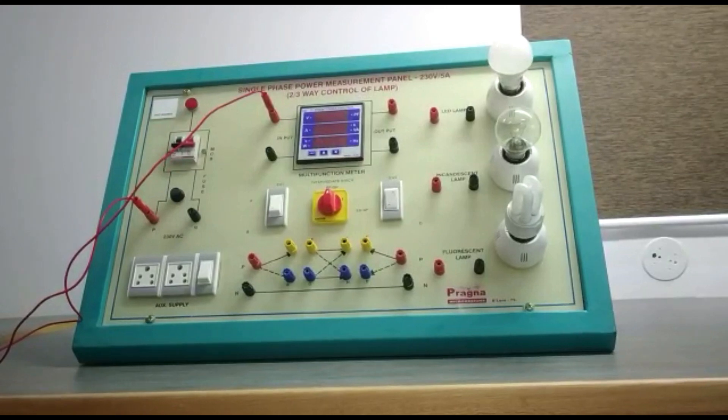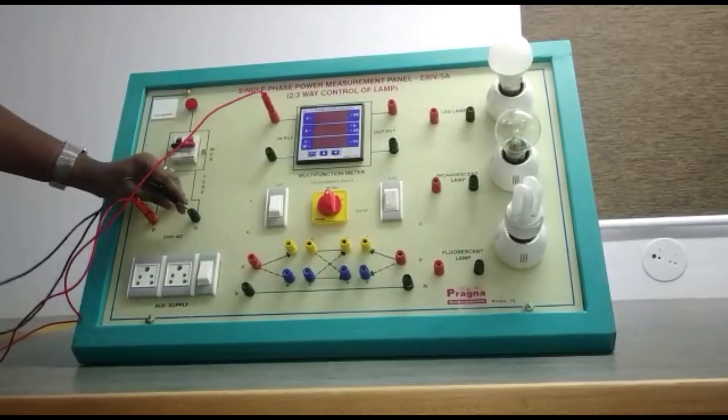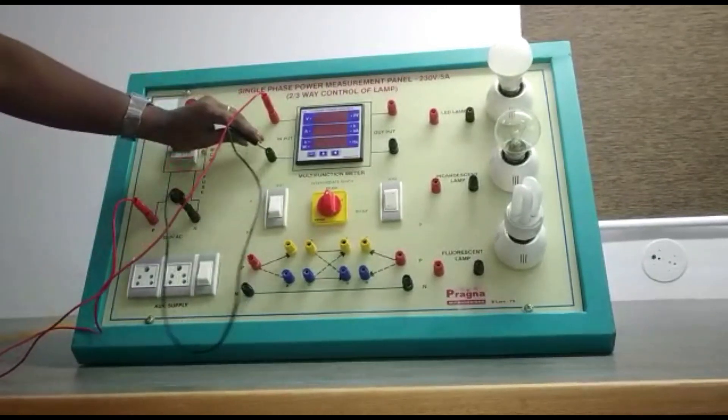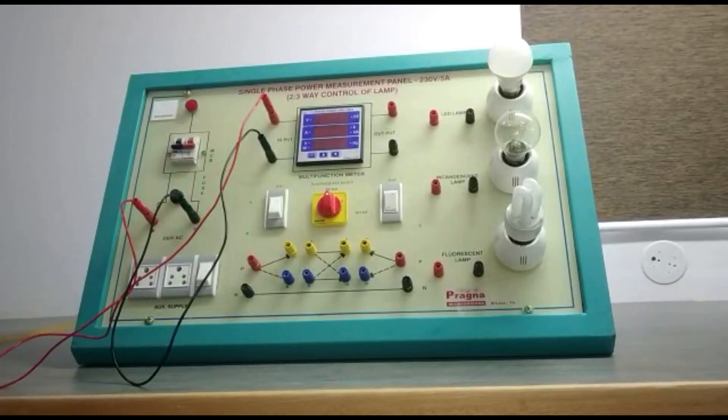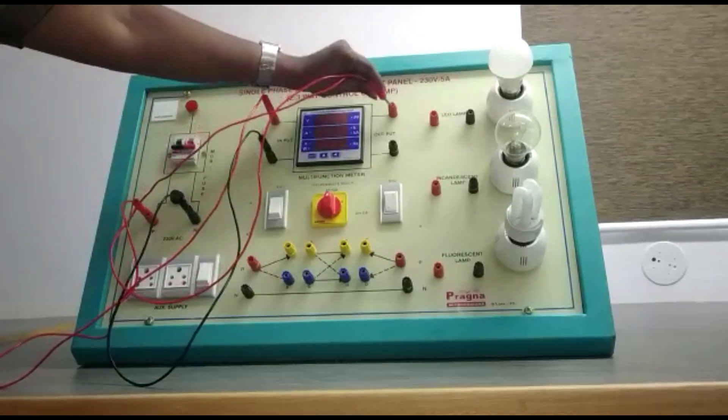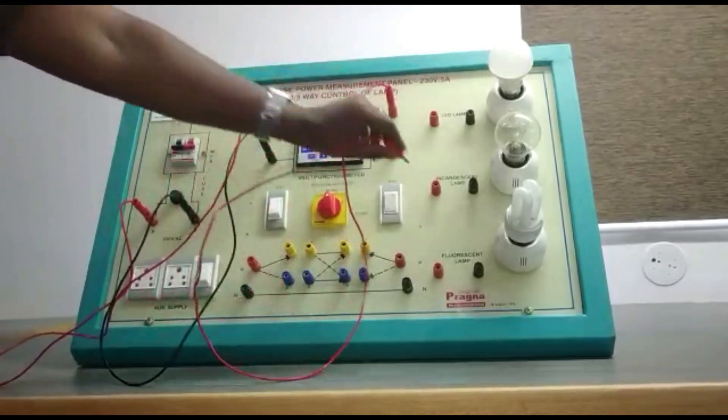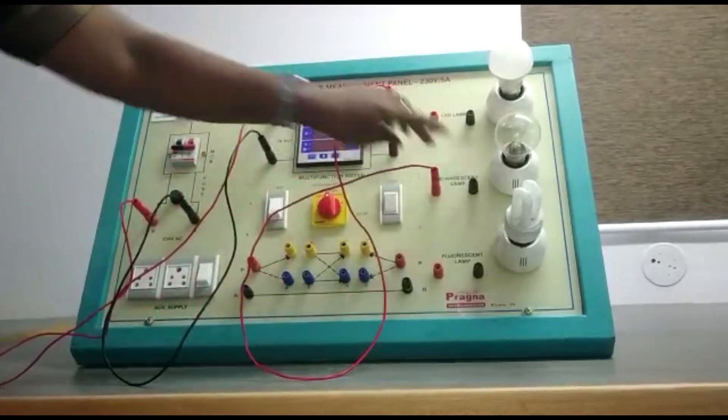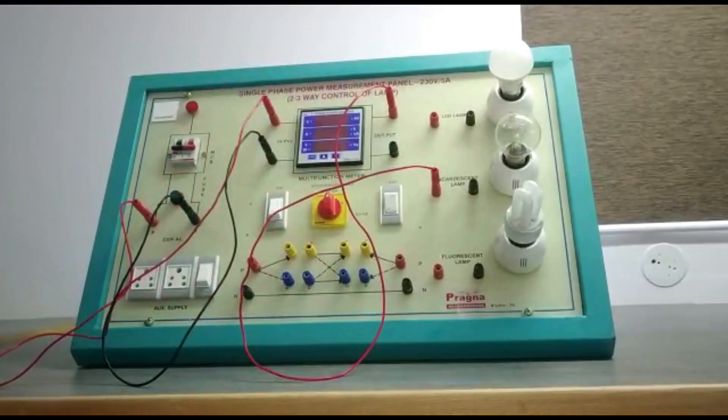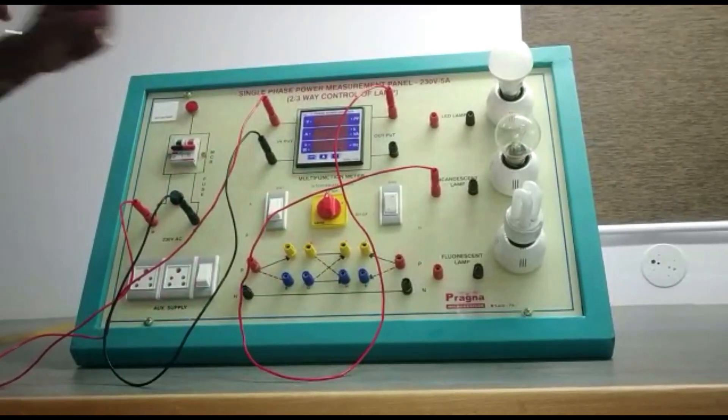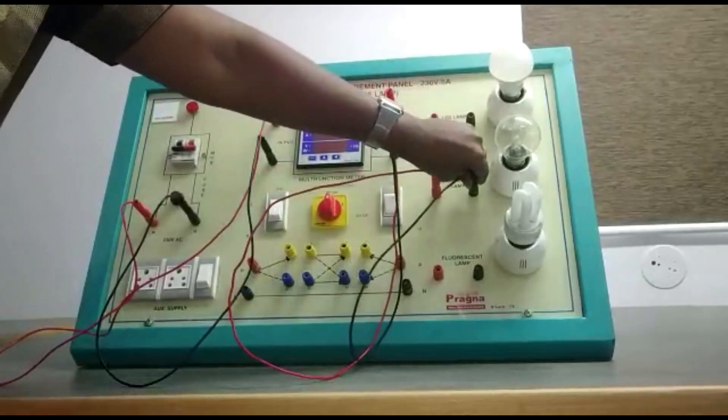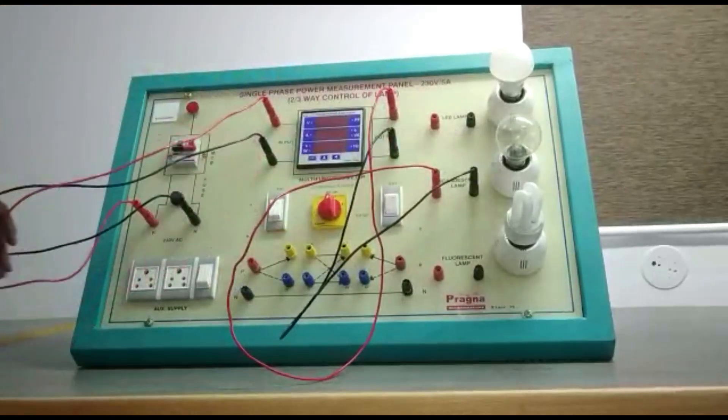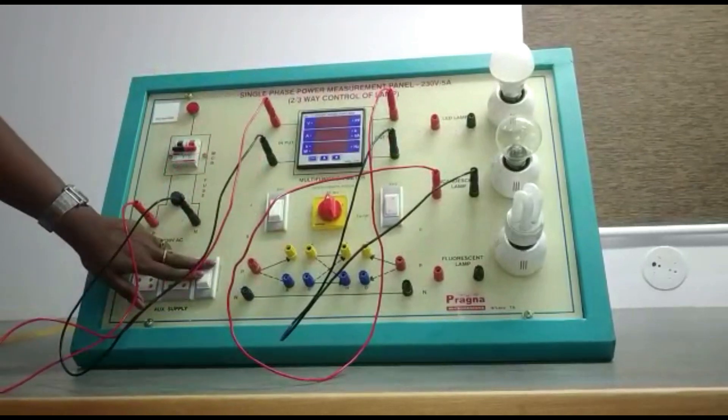Now the negative is being connected to the input of the meter like this. The output from the meter is given to the incandescent lamp input, then the negative is connected like this. After the connections are made, we are going to turn on the meter first and then the MCB.